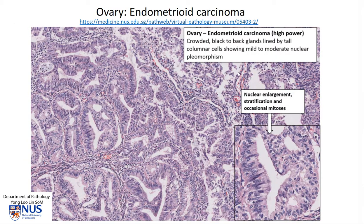Taking a closer look at the microscopy — these pictures are taken from the Pathweb online resource — we can see that the cells are very columnar, quite tall, and they form these tubular structures which are very closely packed with hardly any stroma around them. This is the classical appearance of endometrioid carcinoma, and this appearance is the same whether it is endometrioid carcinoma of the ovary or endometrioid carcinoma of the endometrium in the uterus.